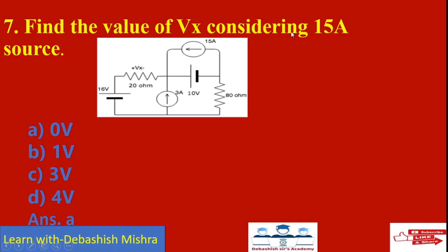Find the value of Vx considering the 15 ampere current source — very important question. When you consider the 15 ampere current source, the 10 volt source is short circuit, the 3 ampere and 16 volt sources are open circuit. The 15 ampere current will flow through the shortest path and will not go through the 20 ohm resistance, because current follows the low resistance path. So Vx will be 0 volts.